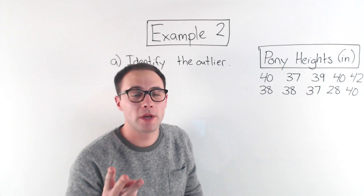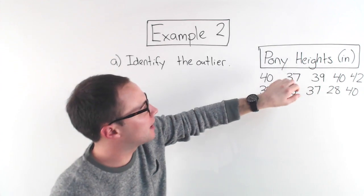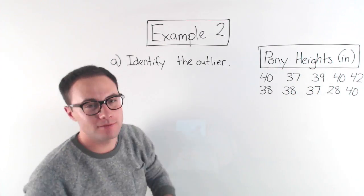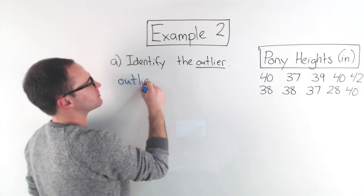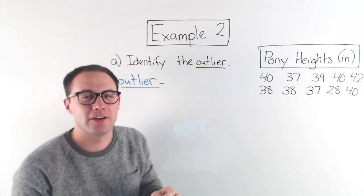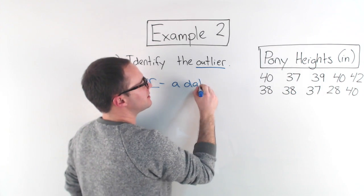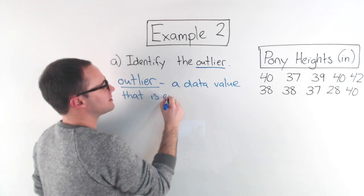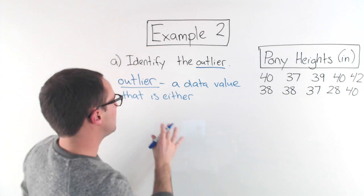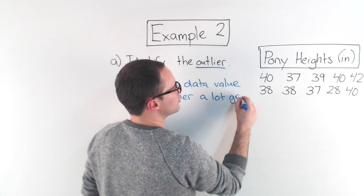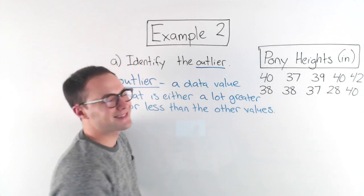Example 2. We're going to have three parts to this example, A, B, and C. So first, A. Identify the outlier. Here's our data, the height of ponies in inches. First, what is an outlier? So an outlier is a data value that lies kind of outside all the other values. What that means is an outlier is a data value that is either a lot greater than all the other values or a lot less. It's kind of outside the other ones.